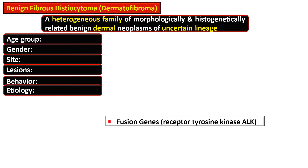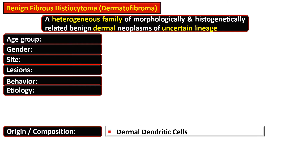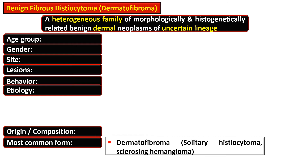Several fusion genes have been identified in this entity, and one frequently identified is the anaplastic lymphoma kinase (ALK) fusion gene. It is suggested that these lesions arise from dermal dendritic cells, or are at least partially composed of these dendritic cells.